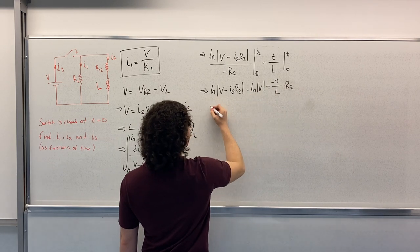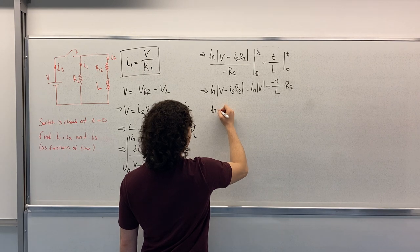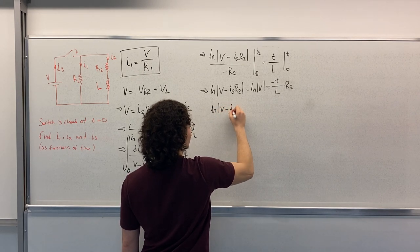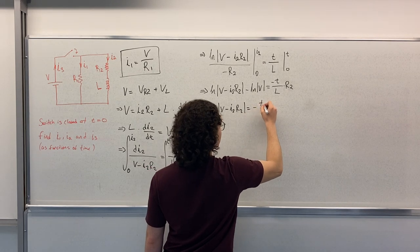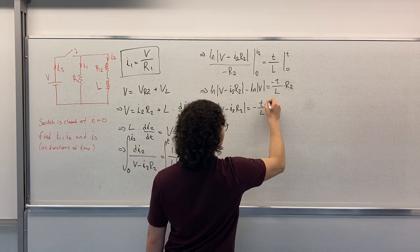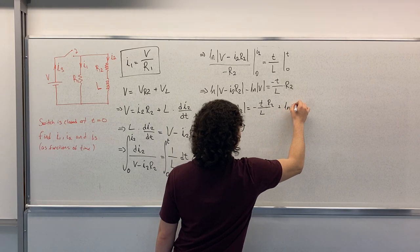Let's put this here. Lm V minus I2 R2 is equal to minus T over L times R2 plus Lm V.